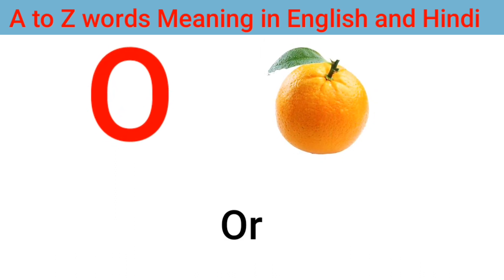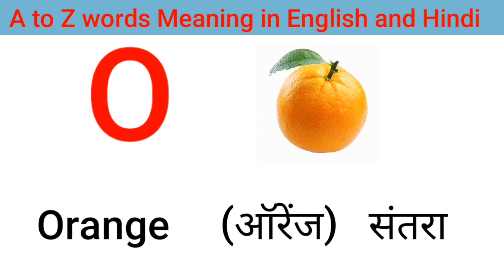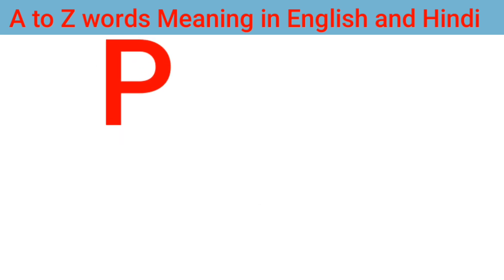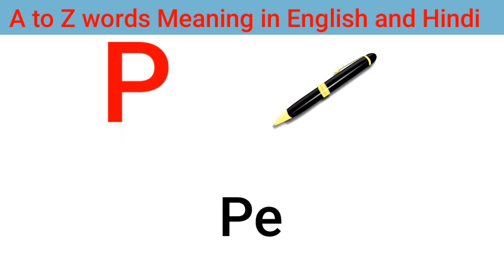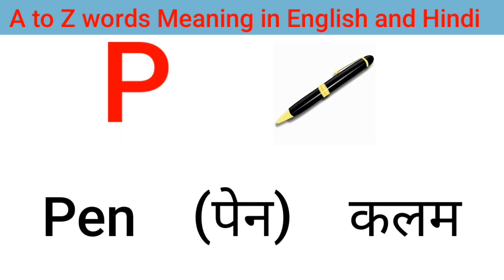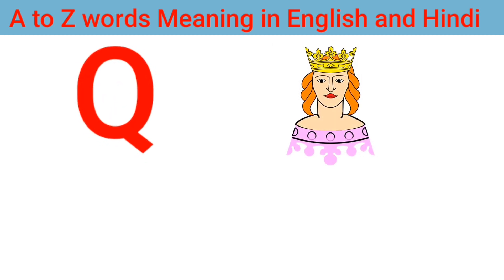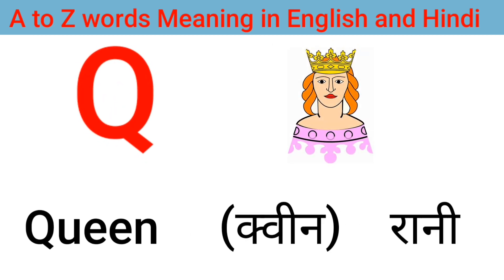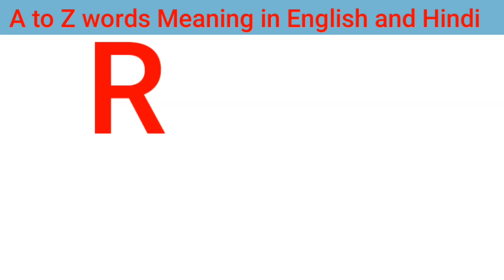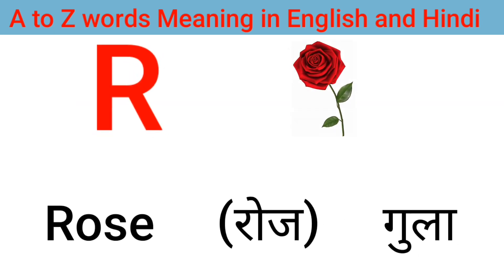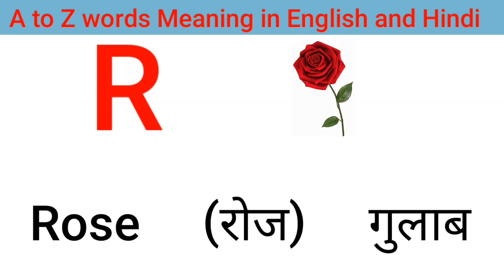O for orange, orange means centra. P for pen, pen means column. Q for queen, queen means rani. R for rose, rose means gulaab.